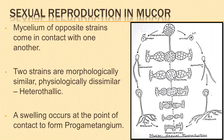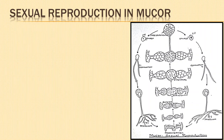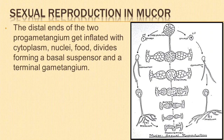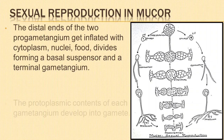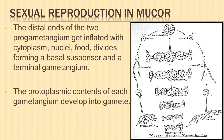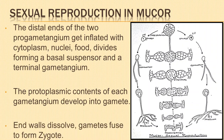The swelling enlarges to form a pro-gametangium. The distal ends of the two pro-gametangia get inflated with cytoplasm, nuclei and food, and get divided by a partition wall into a basal suspensor and a terminal gametangium. The protoplasmic contents of each gametangium constitute the gamete. The end walls of the two gametangia get dissolved and the protoplasm of the two gametes intermingles, forming a single fusion cell called the zygote.